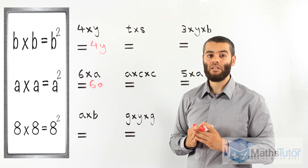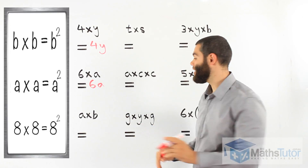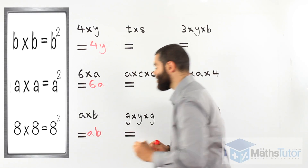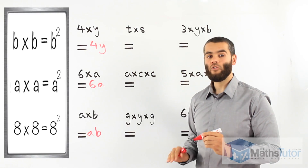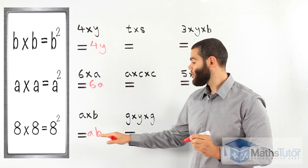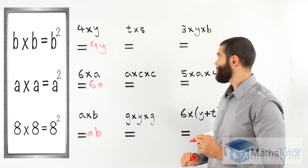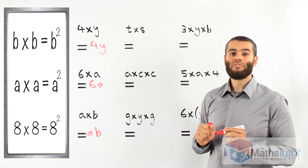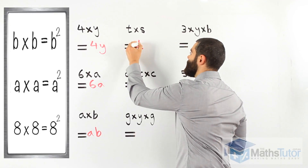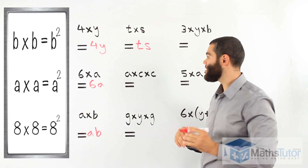A times B — what do we do? The multiplication sign: see you later. A times B becomes AB. We've written it in simple form. T times S: the multiplication sign, once again, gone.